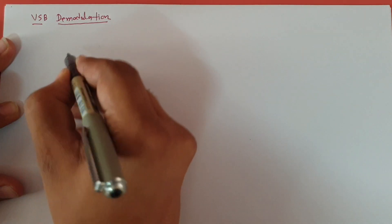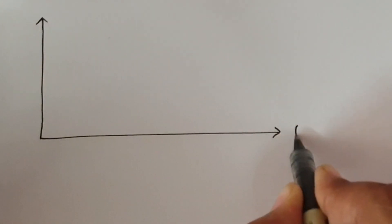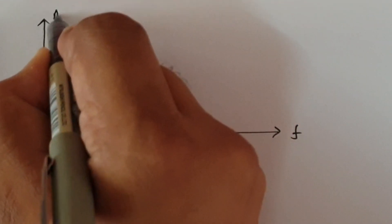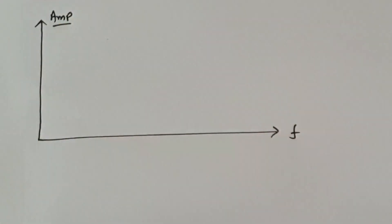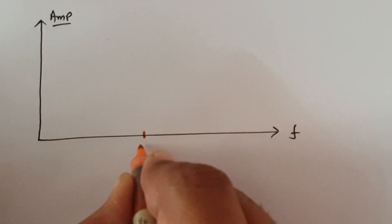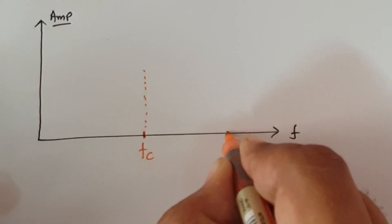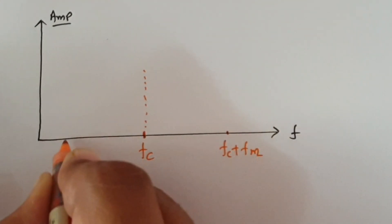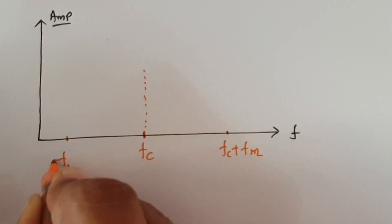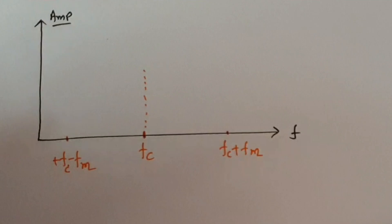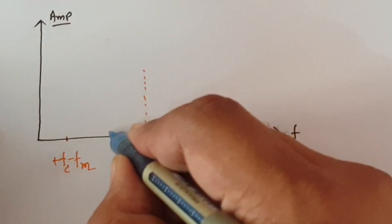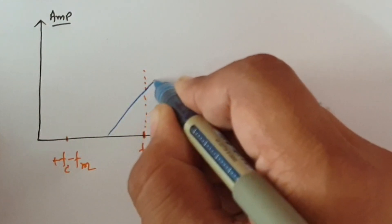First, I will plot the signal's response at the modulation side. If you observe that signal and its frequency response, here we have frequency on one axis and amplitude on the other. We have the carrier frequency FC, and you will find FC plus FM and FC minus FM. The response of the signal in the case of VSB modulation will look like this.